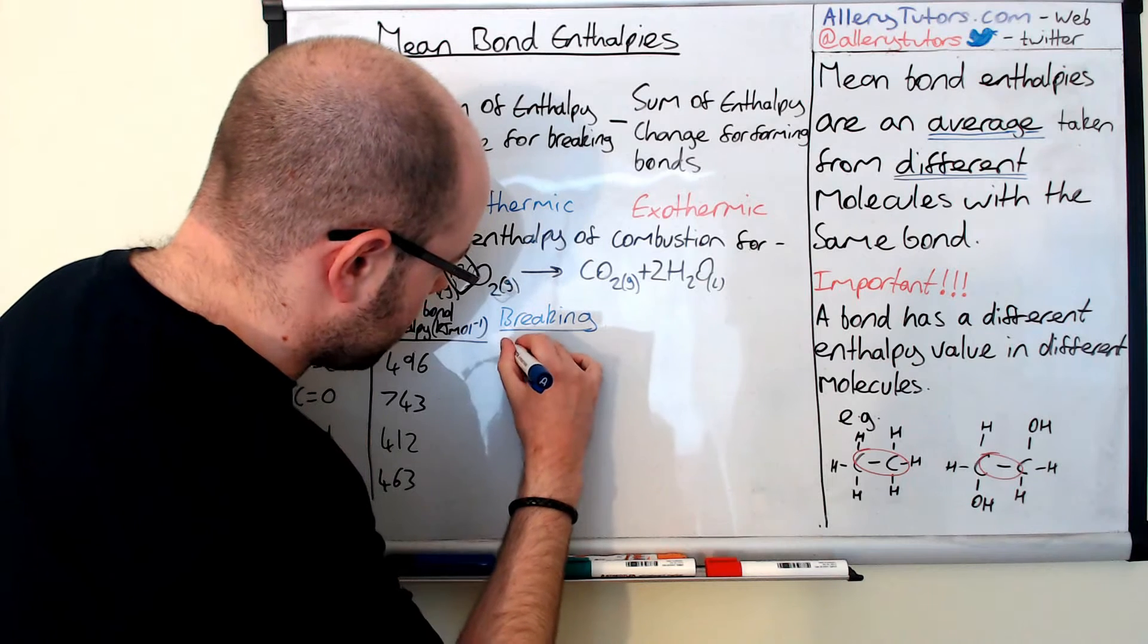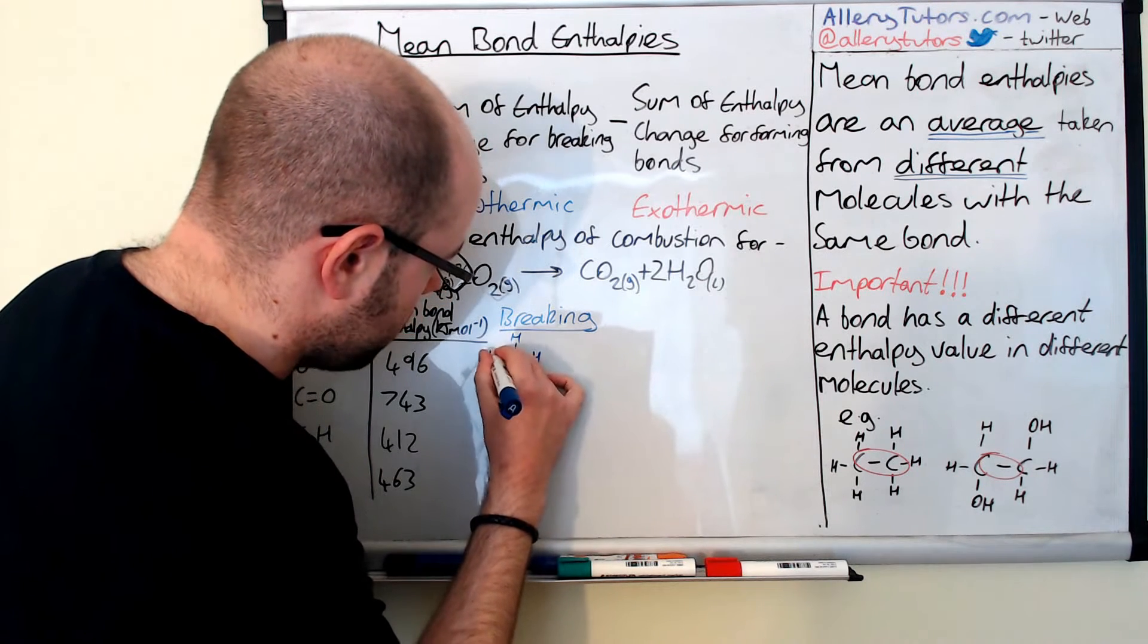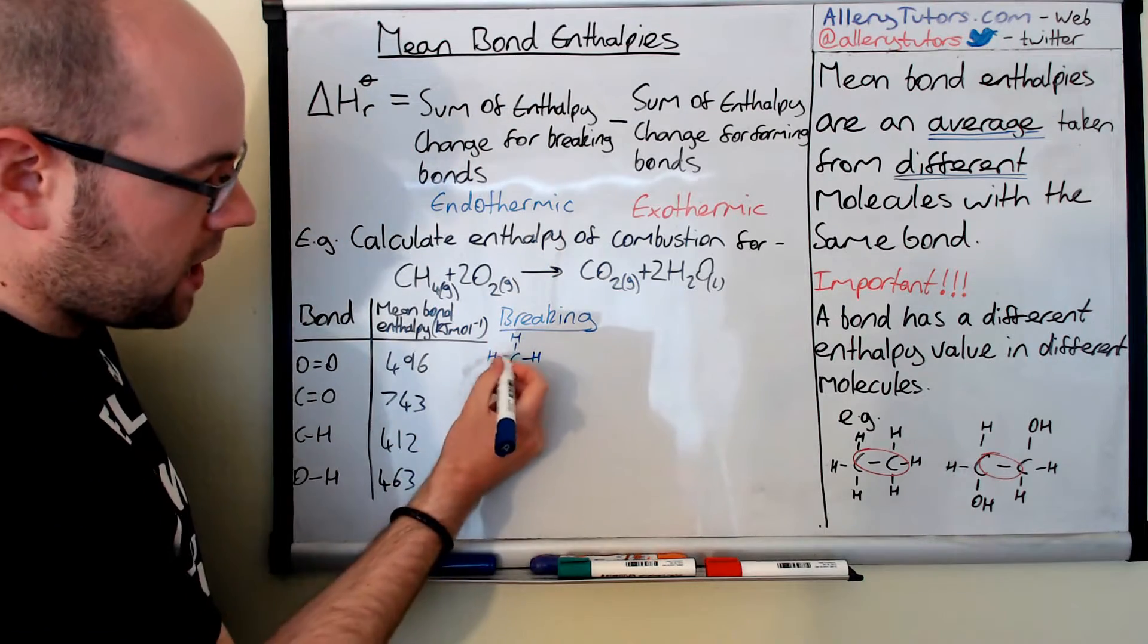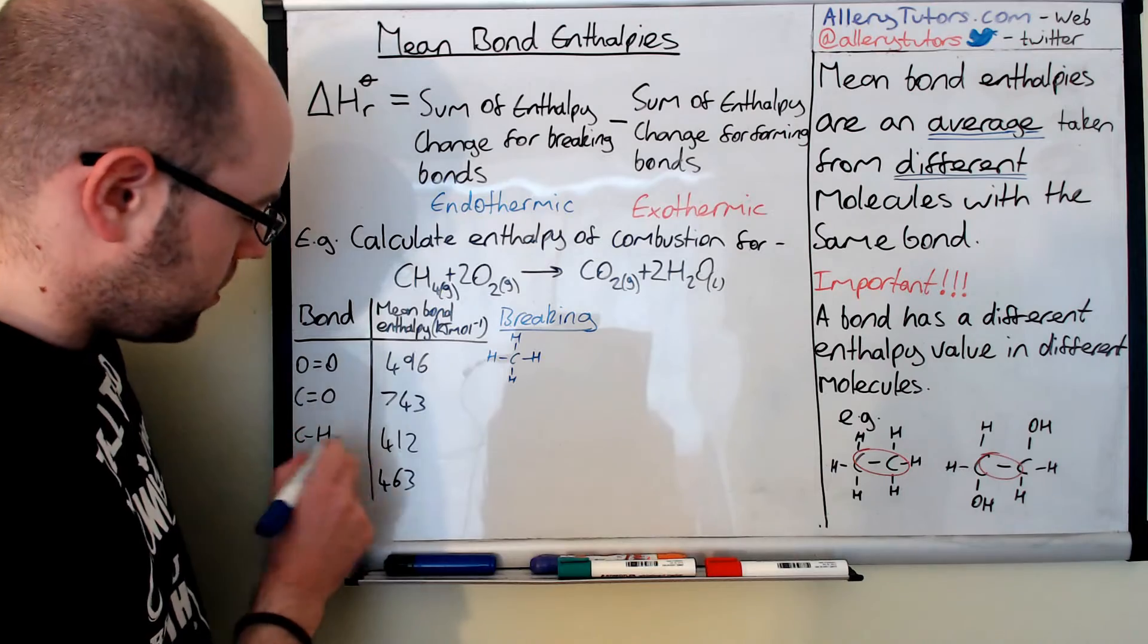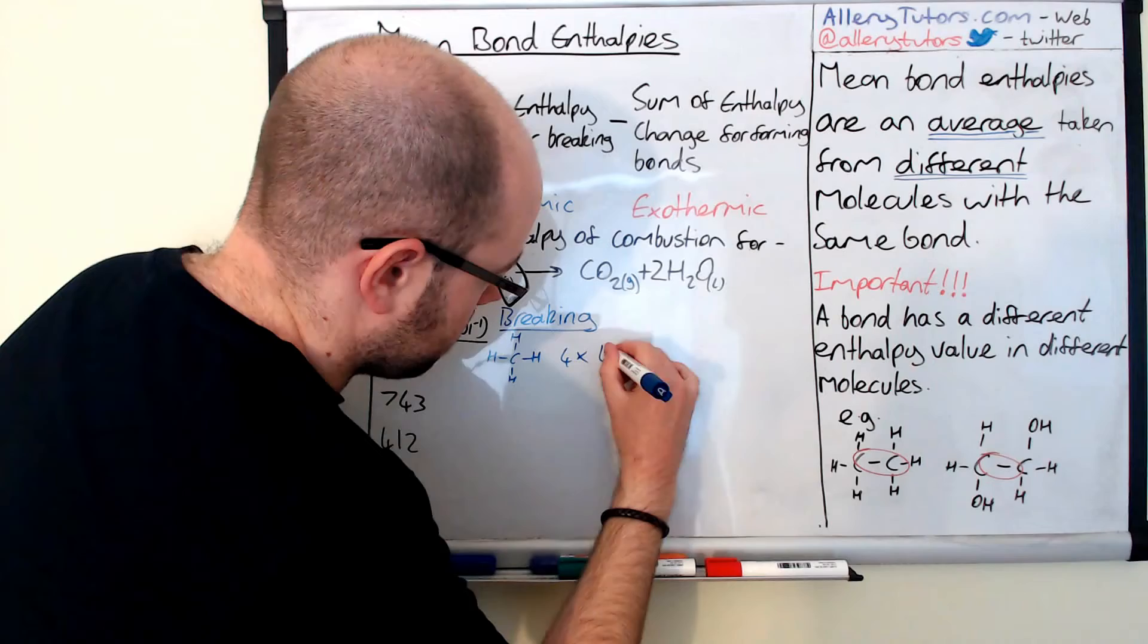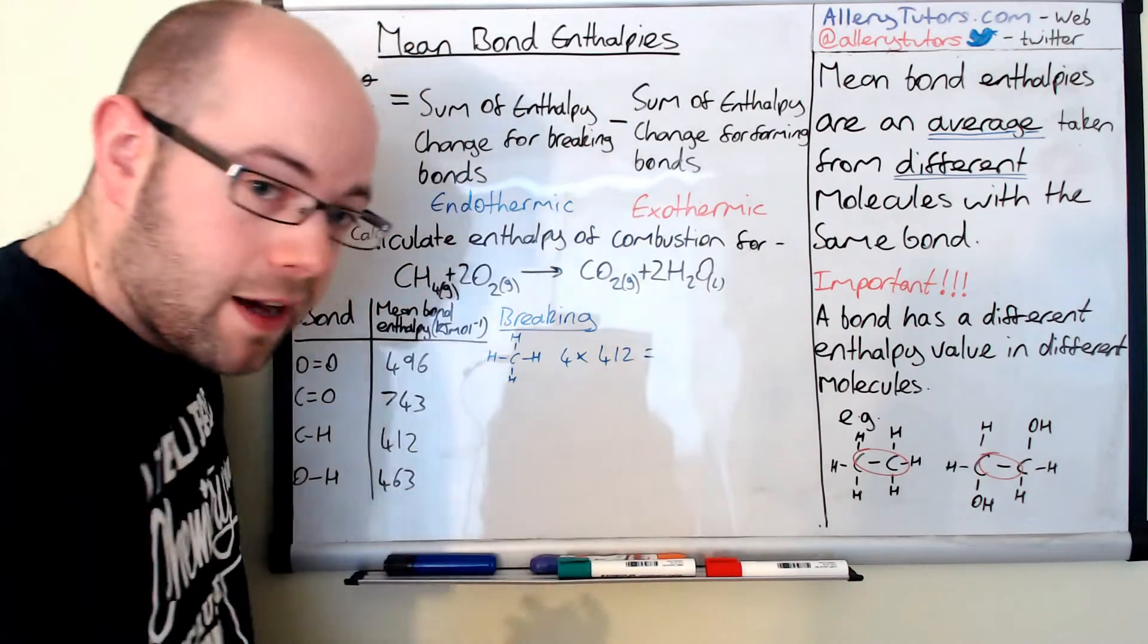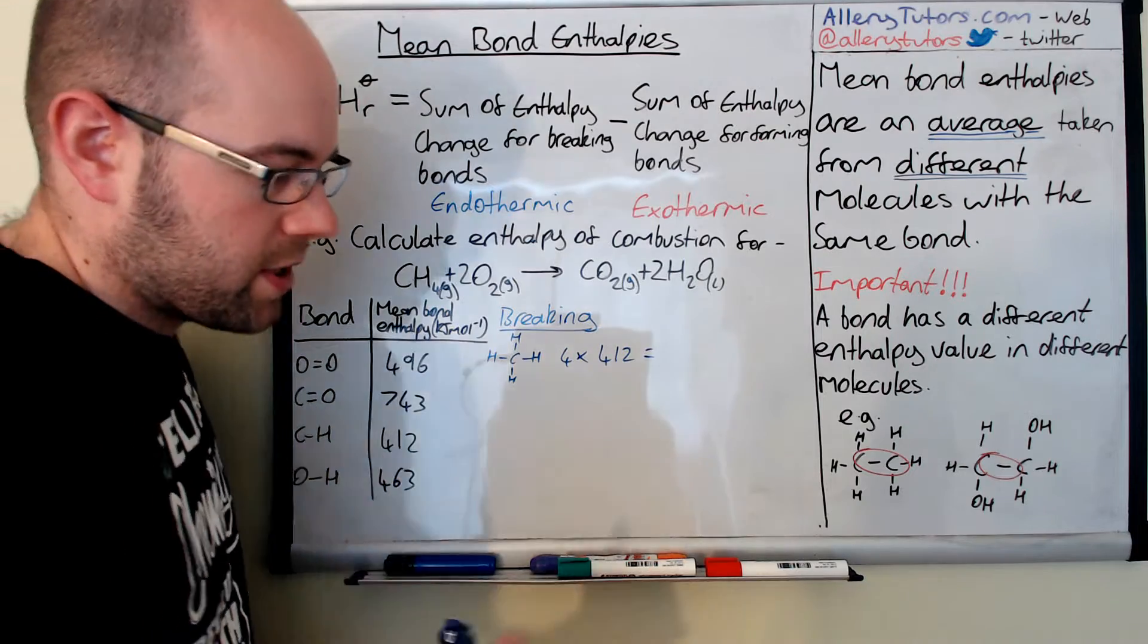We're going to draw out the CH4 which is there. CH4 has got four lots of C-H bonds and we've got the enthalpy value here. We've only got one molecule of CH4, so that's just going to be four lots of 412. If we put that in our calculator, four lots of 412 should get us 1648.